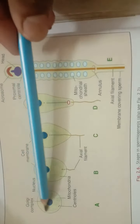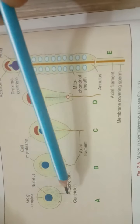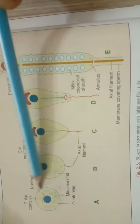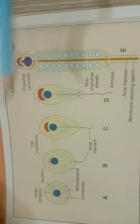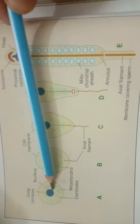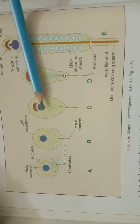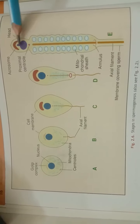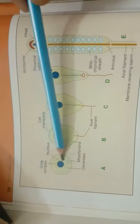The spermatid is a rounded cell which consists of a nucleus, Golgi complex, Golgi apparatus, mitochondria, and centriole. All these structures undergo changes to form the fully formed spermatozoa. The nucleus consists of nuclear material called chromatin and it is highly condensed. The nucleus moves to one side of the cell gradually, forming the head of the spermatozoa. The Golgi complex forms the acrosomal cap of the spermatozoa, also called the acrosome.